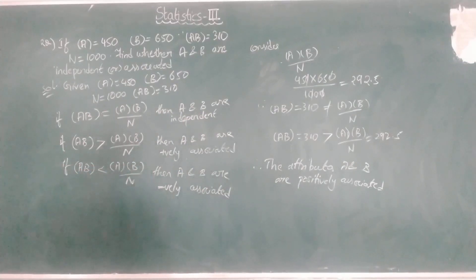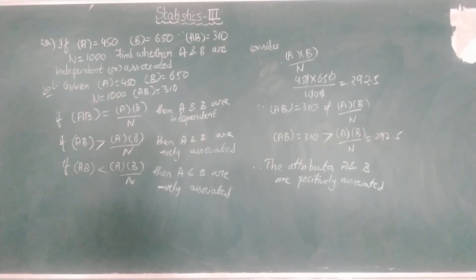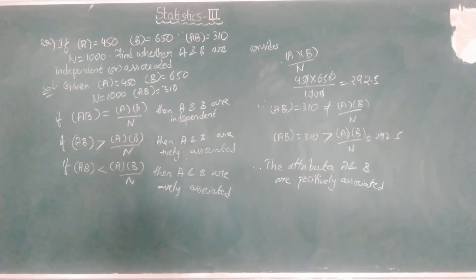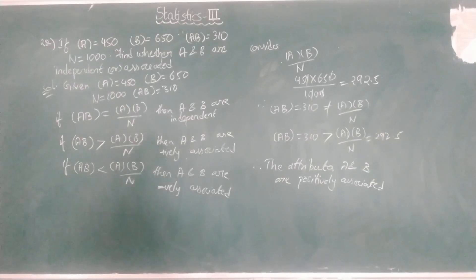Today we have seen what association is, the types of association, and the two criteria for association. We also solved two problems related to association and independence of attributes. In the next class we will study the measures of association — how to measure the degree of association between attributes.